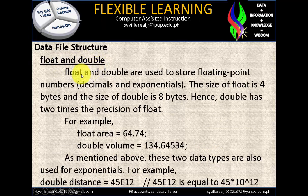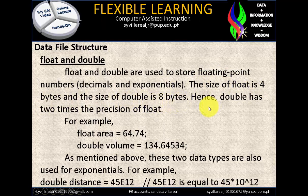Float and double are used to store floating point numbers, decimals, and exponentials. So if you are going to compute for exponentiation, you need to use float or double. The size of float is 4 bytes and the size of double is 8 bytes. Hence, double has two times the precision of float — it's better to use double, but if you have lesser memory capacity, it's better to use float.